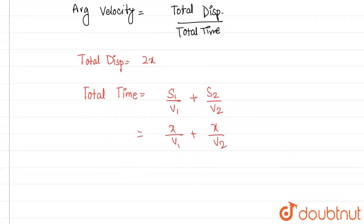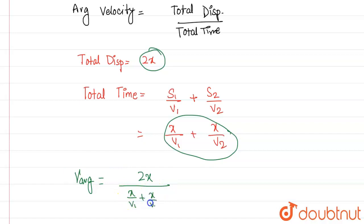Now what we have to do? It's quite simple now. We'll just replace this total displacement and total time in this equation. So V average, which is average velocity, will be equal to total displacement is 2x and total time is x by v1 plus x upon v2.